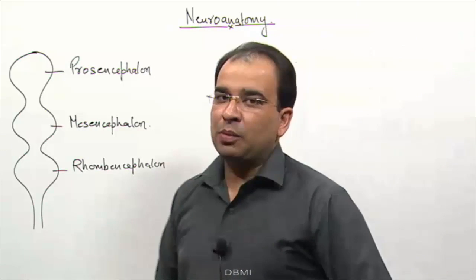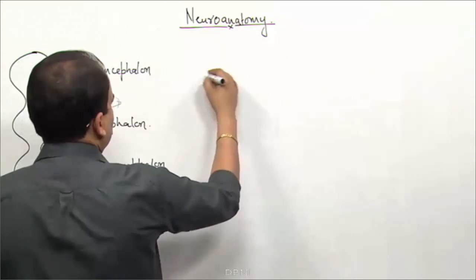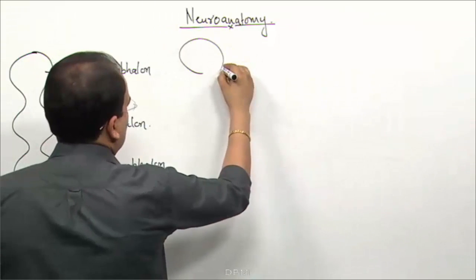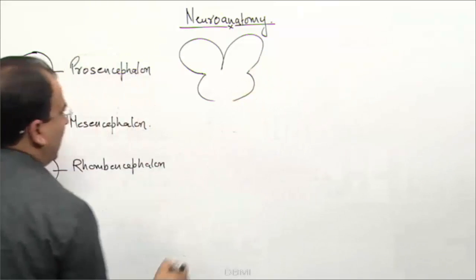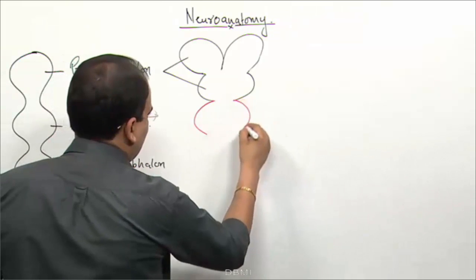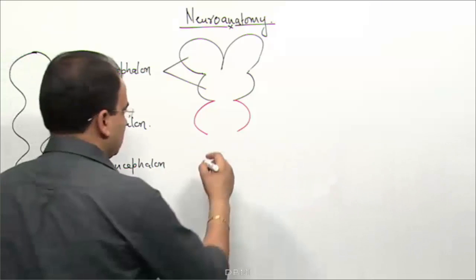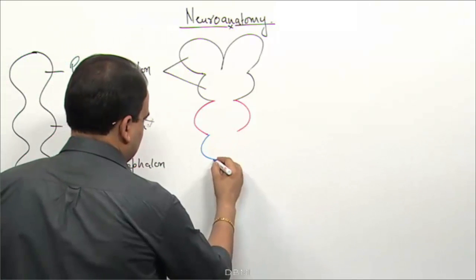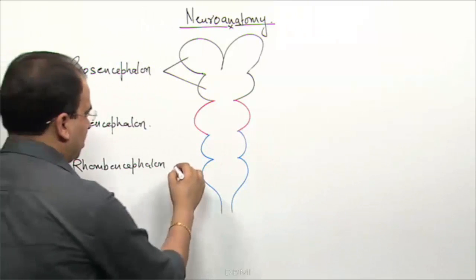In the further division, in the formation of the secondary brain vesicles, the prosencephalon will further divide into the telencephalon and diencephalon. The mesencephalon remains unchanged, and the rhombencephalon further divides into two parts.